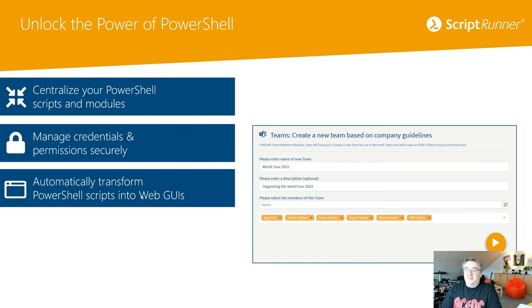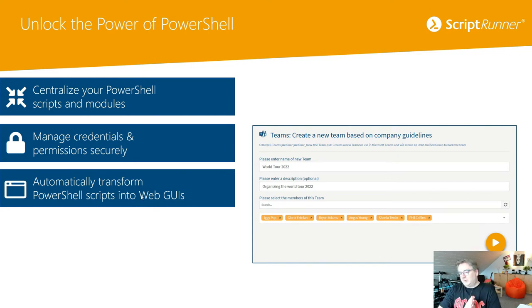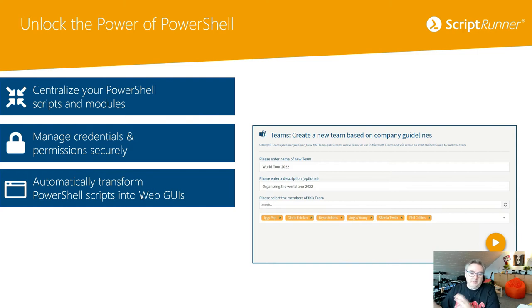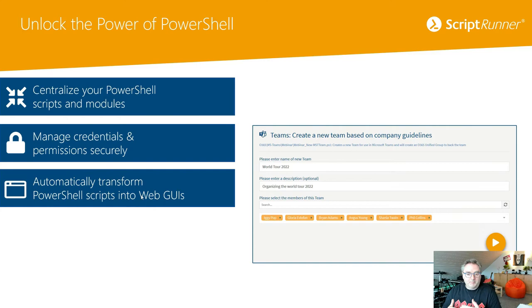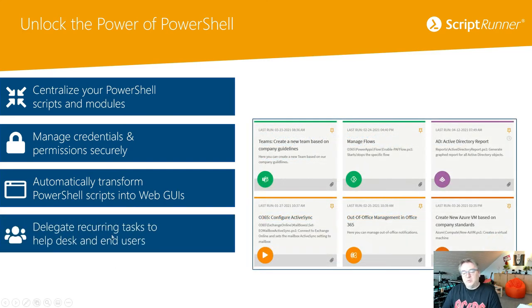Because standardization is very important, all security settings — like whether to allow GIFs, private or public channels — are pre-configured in the background. In this case, even the channel names are pre-configured. Only what needs the user's attention is visible in the form. You control what's visible and what's pre-configured to ensure compliance with company guidelines — and all without any additional coding. It just reads the synopsis and the parameter block from the script, then delegates tasks to Helpdesk or end users.